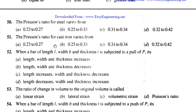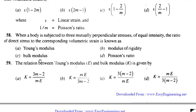Poisson's ratio of cast iron varies from 0.23, and the correct range is 0.25 to 0.33.